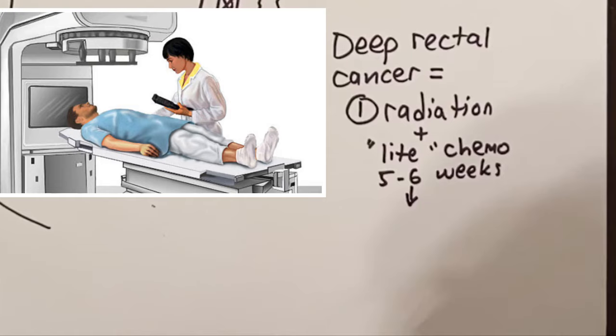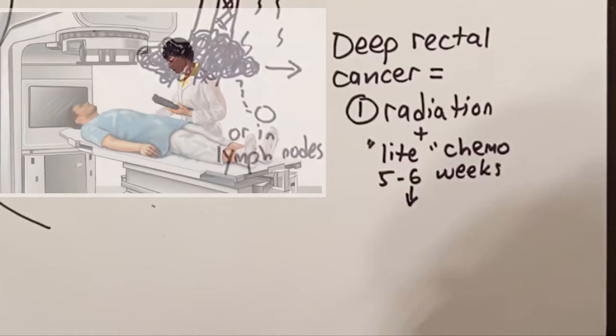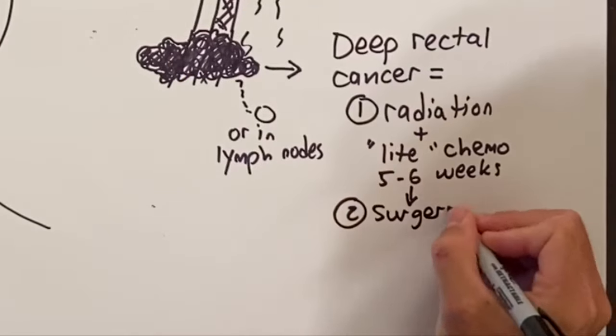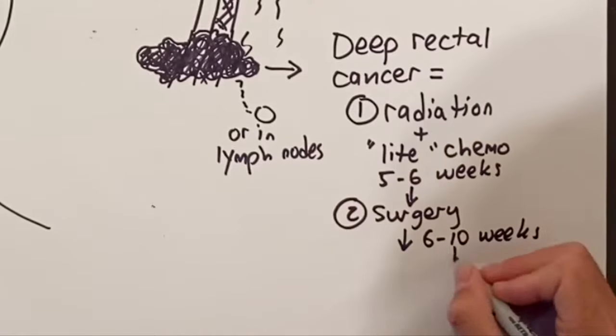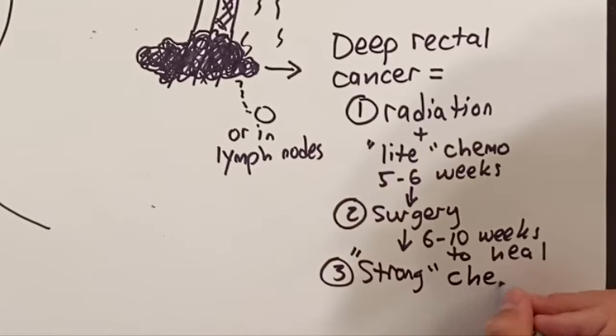Radiation with light chemo lasts five to six weeks. After radiation, we typically do surgery next, then chemotherapy if needed comes last.